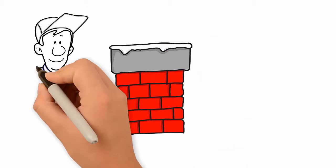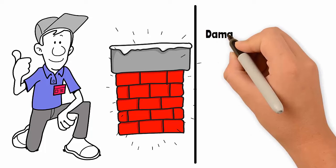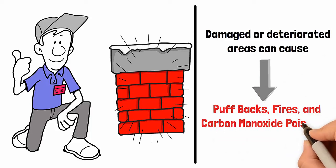cleaned and inspected annually. Damaged or deteriorated areas can cause problems like puffbacks, fires, and carbon monoxide poisoning. For only